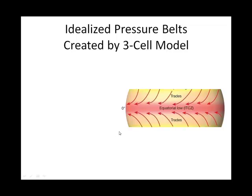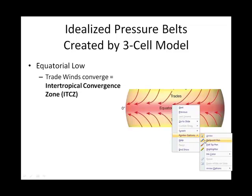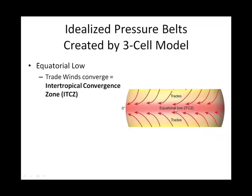Related to the three-cell model, with three cells in each hemisphere, we should have these kinds of surface pressure belts. And we do kind of see them, in a sense. For instance, where the two Hadley cells meet — we said that that is about at the equator.